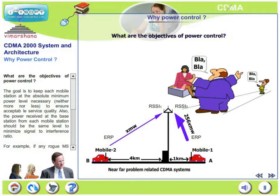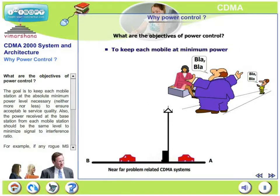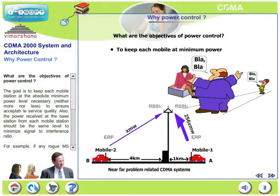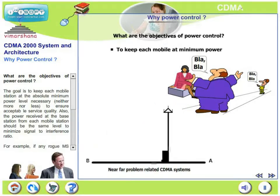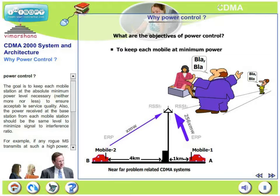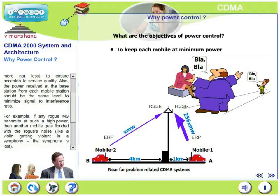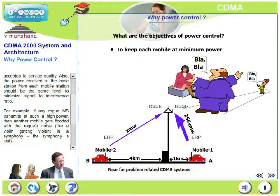What are the objectives of power control? There are two major objectives. The first goal is to keep each mobile station at the absolute minimum power level necessary — neither more nor less — to ensure acceptable service quality across the entire network. The second goal is that the power received at the base station from each mobile, irrespective of where it is in the network, should be the same level. If signals from all mobiles arrive at the base station at the same level, there is minimization of signal-to-interference ratio. These are the two specific goals of the power control mechanism.